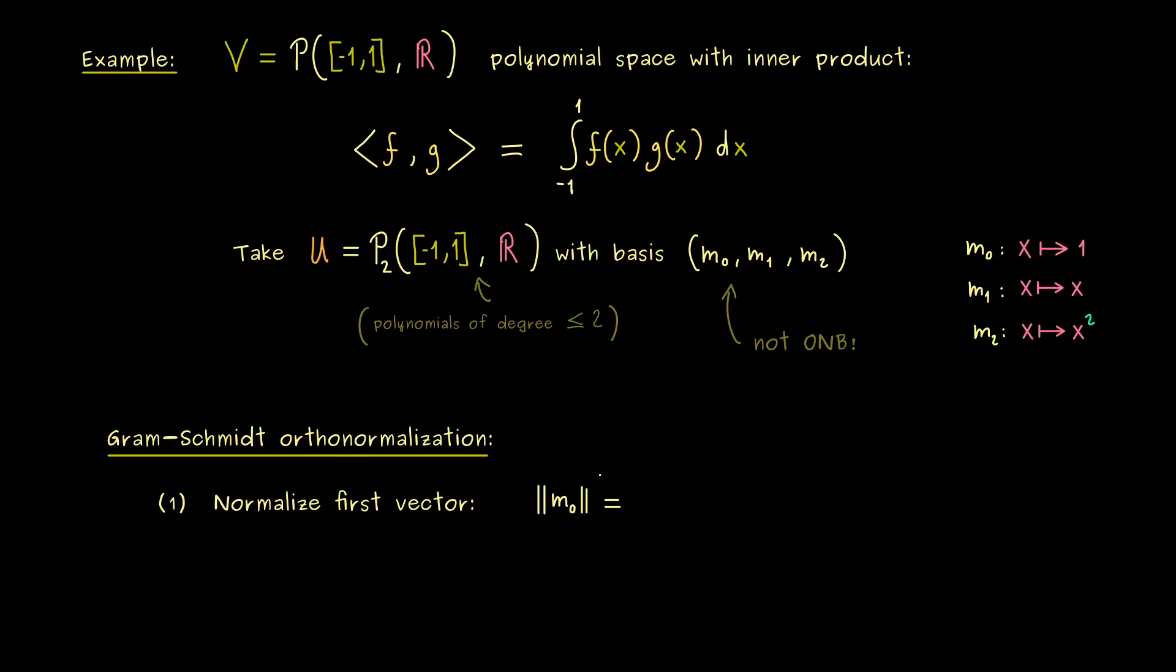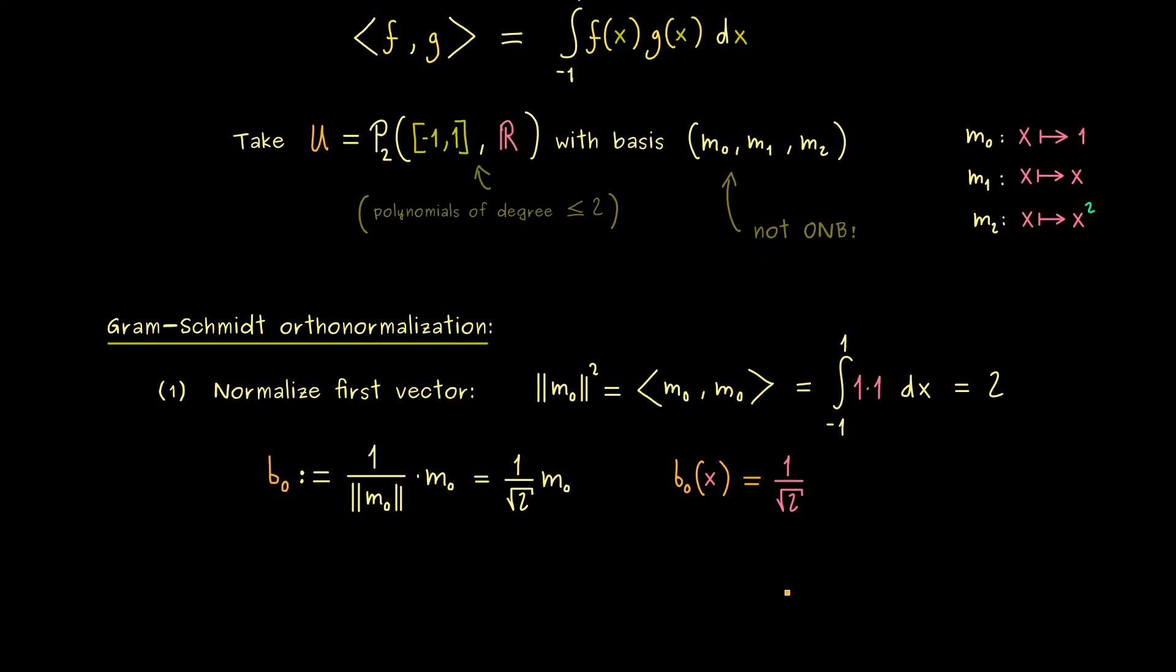So we have to calculate the norm of m0. Moreover, important to know here is, for calculation reasons, you should always square this norm because then we can just calculate the inner product without any square root. In our case, it's an integral from minus 1 to 1, and the function inside is just 1 times 1. Not hard at all, this integral is exactly 2. Hence, our first new basis element, which we now also call b0, is given as 1 divided by this norm times m0, so just 1 over the square root of 2 times the monomial. Hence, b0 of x is just given by the constant function with constant 1 over the square root of 2.